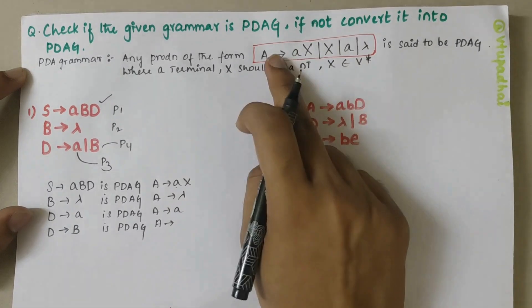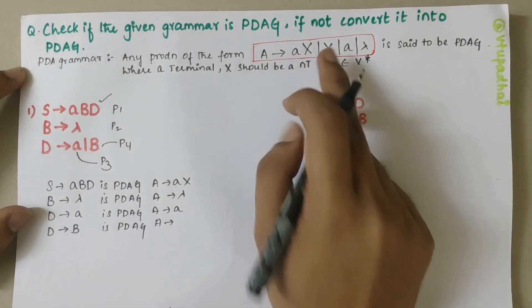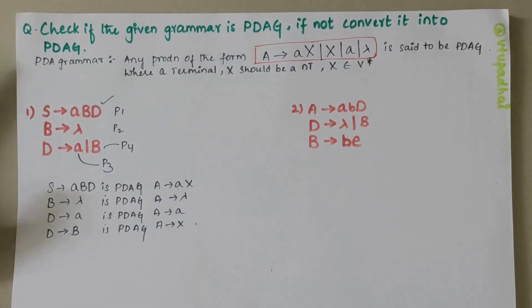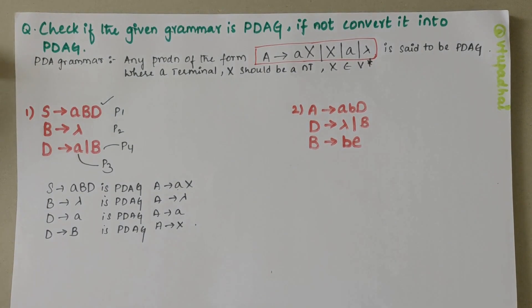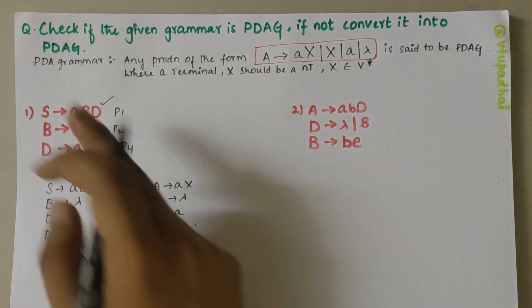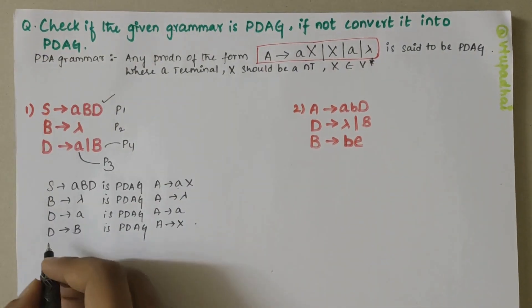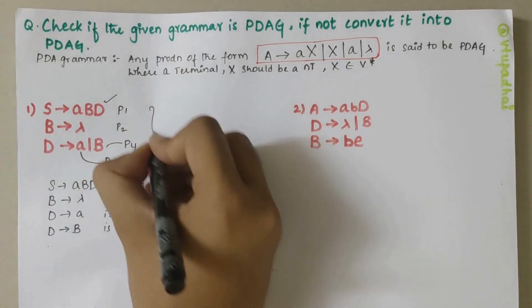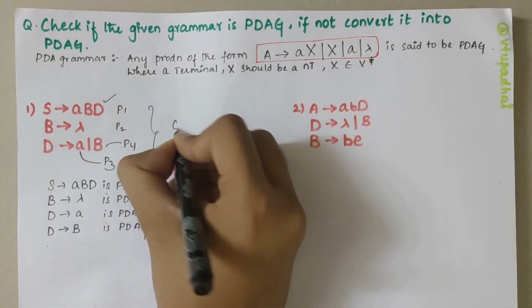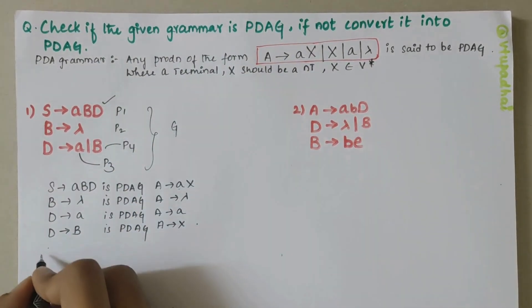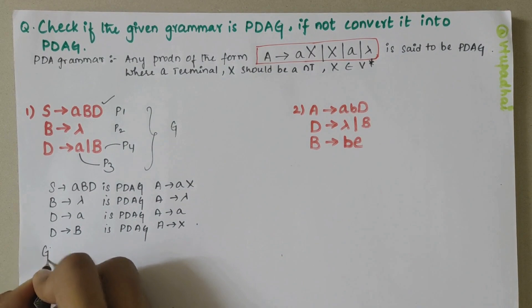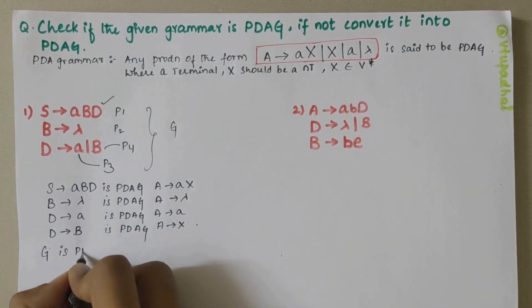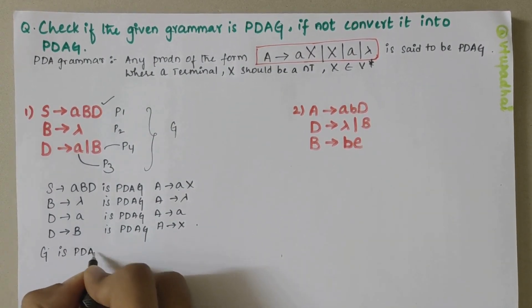D derives B is PDAG because it is of the form A derives X — that is A derives B. So I can say that the given grammar G is PDAG.